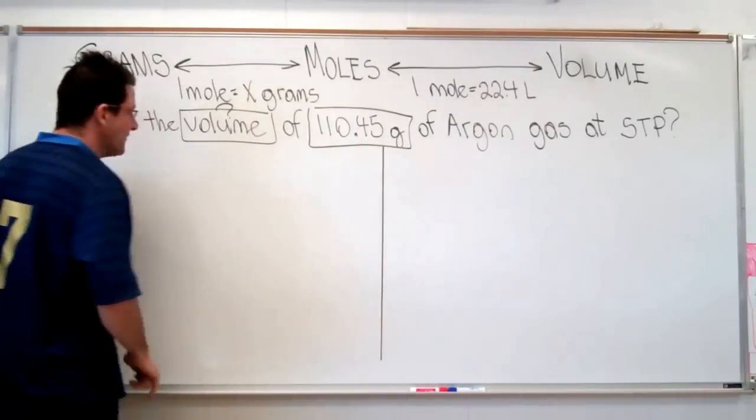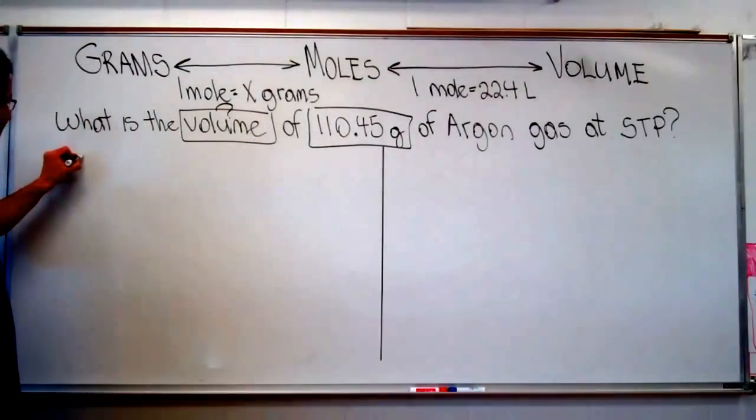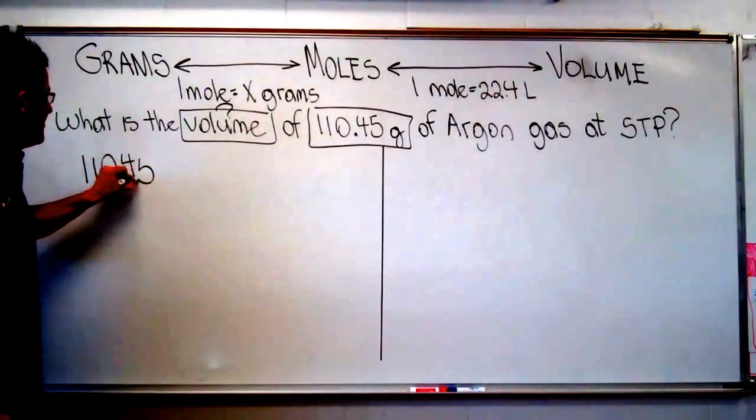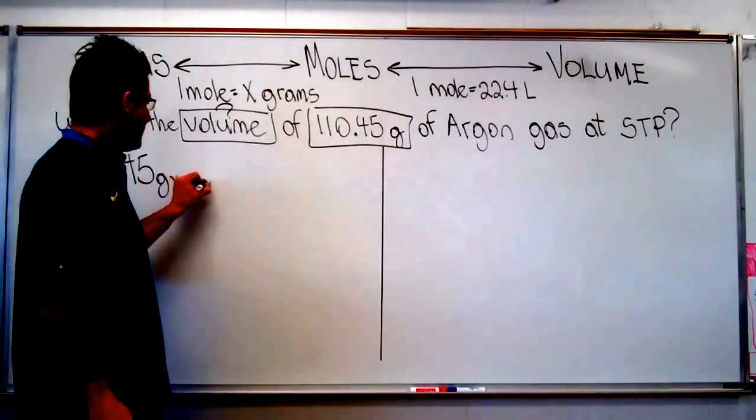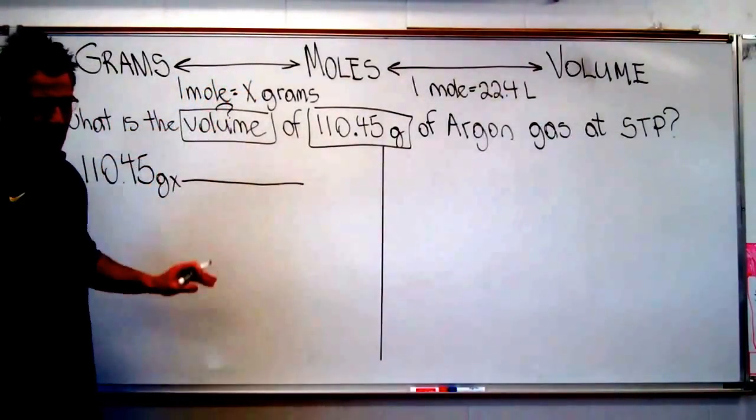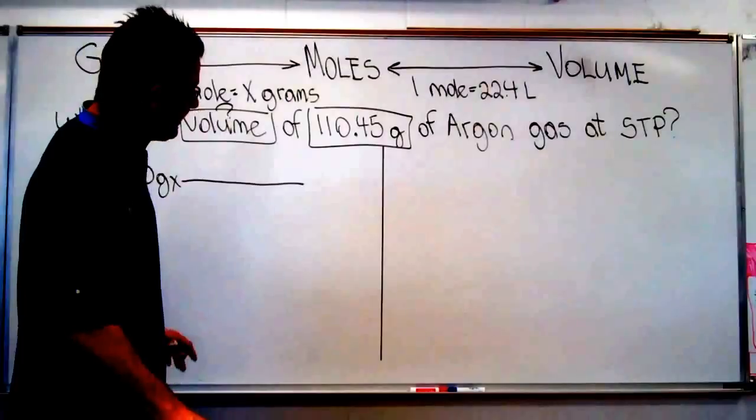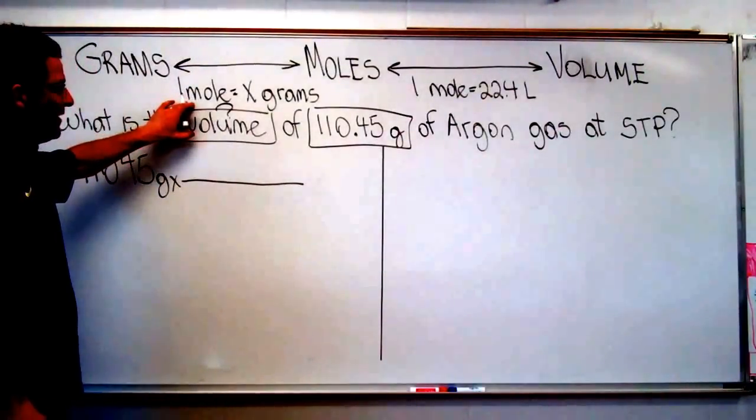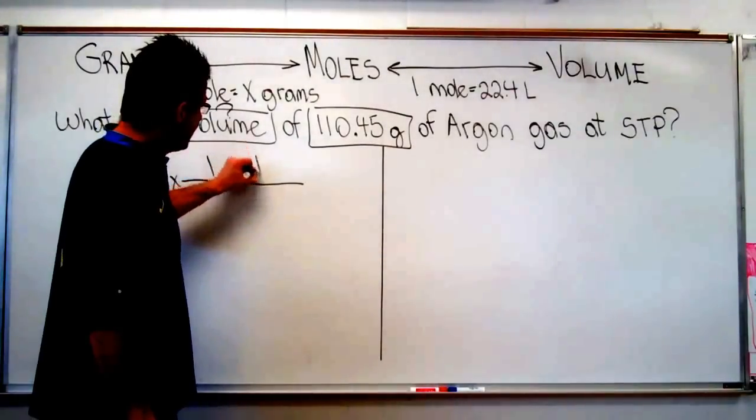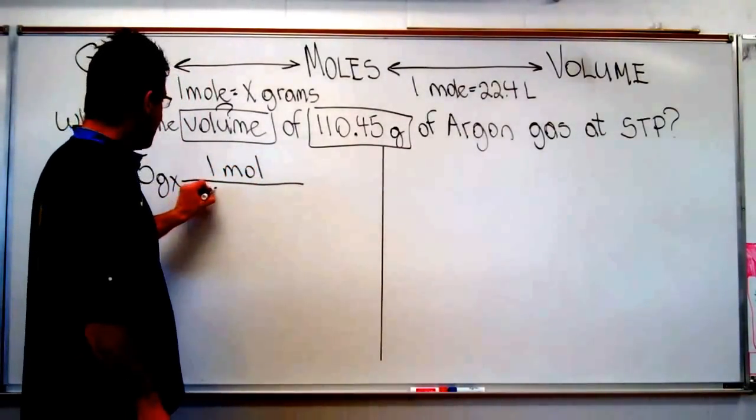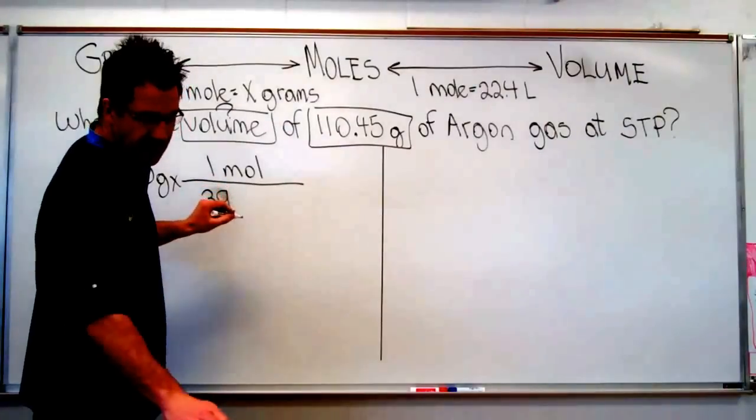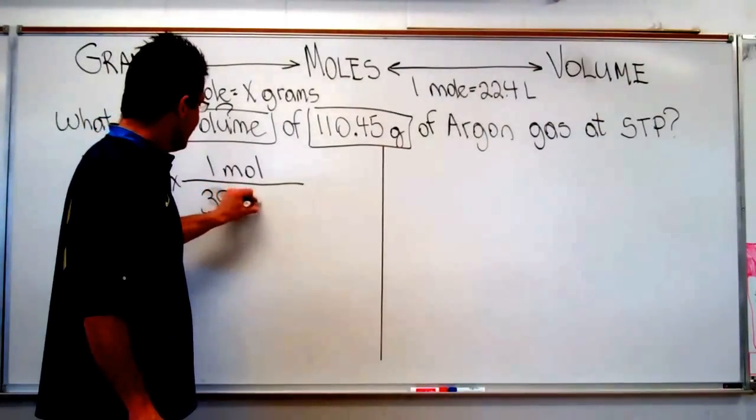Now we're going to use our conversion factors. The first thing we're going to do for part one is we're going to write down what we've been given, 110.45 grams. We're going to do our first conversion, converting from grams to moles. We know that the molar mass is the conversion factor that we're going to use. And in this case, we're going to put the mole on the top. We're going to put the molar mass of argon on the bottom. The molar mass is 39.94 grams.